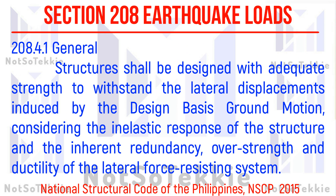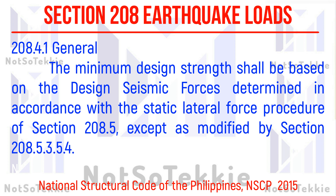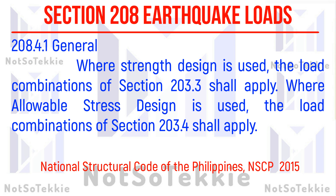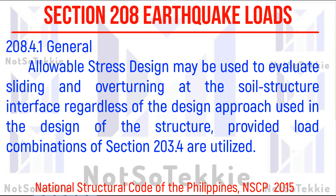Basis for Design: structures shall be designed with adequate strength to withstand the lateral displacement induced by the design ground motion, considering the inelastic response of the structure and the inherent redundancy, over-strength, and ductility of the lateral resisting system. The minimum required strength will be based on the design seismic forces determined in accordance with the static lateral procedure of Section 208.5, as modified by Section 208.5.4. Where strength design is used, the combination of Section 208.3 shall apply. Where allowable stress design is used, the load combination of Section 203.4 shall apply. Allowable stress design may be used to evaluate sliding and overturning at the soil-structure interface regardless of the design approach, provided load combinations of Section 208.3 are utilized.